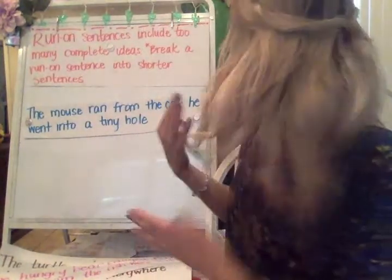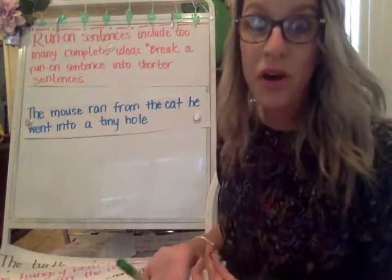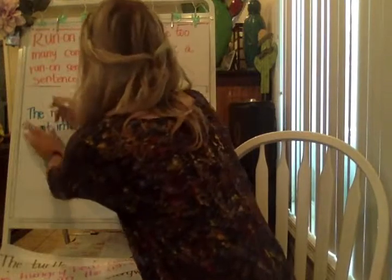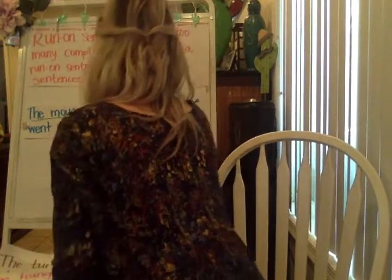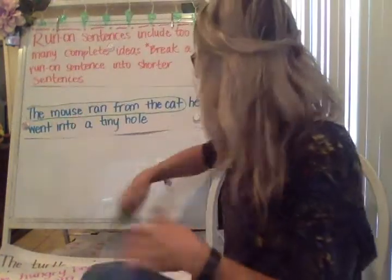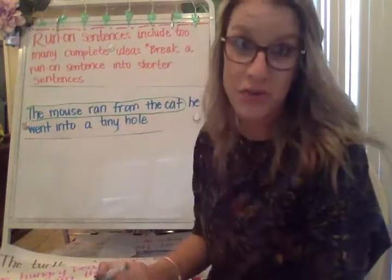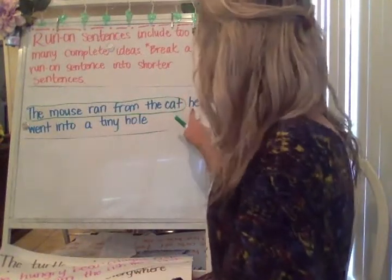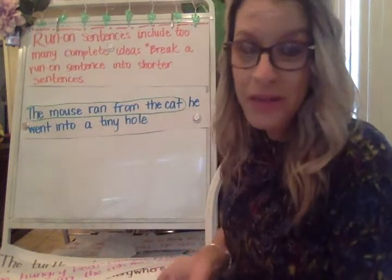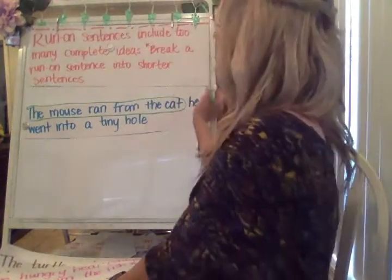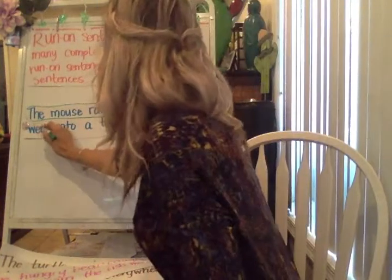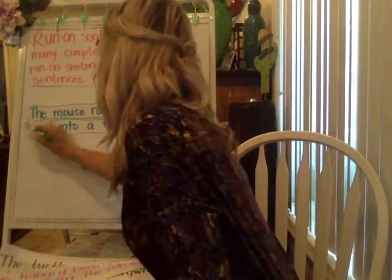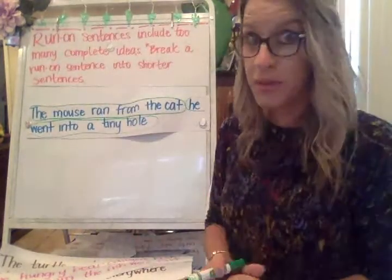This has more than one complete thought. If I'm looking at this and asking what are the complete thoughts — the first complete thought is 'the mouse ran from the cat.' I could put a big circle around this. It tells me the naming part of the mouse and that the mouse was running from the cat, which would be the action. 'He went into a tiny hole' — that could be another complete thought, another complete sentence. I'm circling where my complete thoughts are.